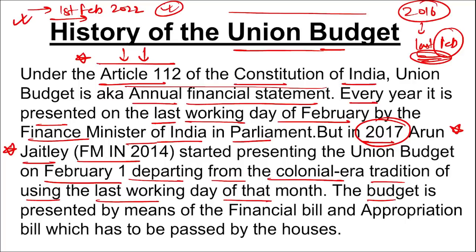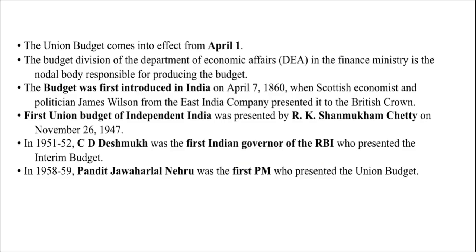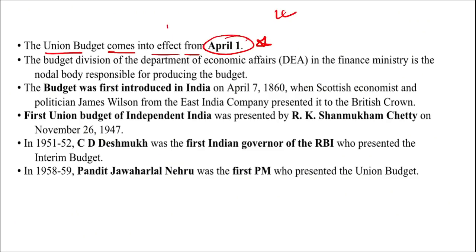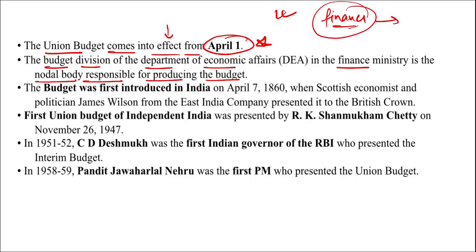The budget is presented by means of the Financial Bill and the Appropriation Bill, which must be passed by both Houses. The Union Budget comes into effect from 1st April. Finance-related or money-related bills are always presented in the Lok Sabha — the lower house. The Budget Division of the Department of Economic Affairs in the Finance Ministry is the nodal body responsible for producing the budget.